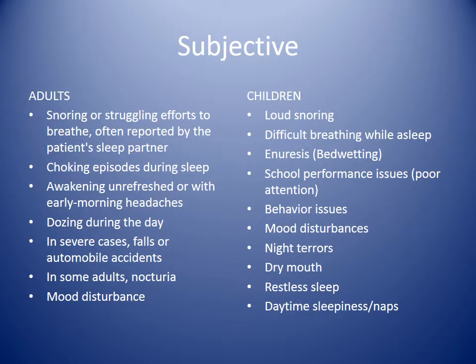With children, you're going to see loud snoring and difficulty breathing while asleep. They have issues with enuresis or bedwetting. They usually have school performance issues due to poor attention. They have behavior issues — think about what a kid is like when they don't get their nap, and imagine not sleeping well for weeks or months. Mood disturbances and night terrors are also possible. They often have a dry mouth, possibly allergy-related, restless sleep, and daytime sleepiness — they may fall asleep watching TV while everyone else is engaged.